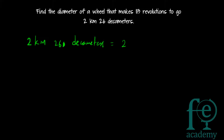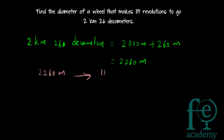So 2 kilometers 26 decameters equals 2000 meters plus 26 decameters, which is 260 meters. Therefore 2 km 26 decameters equals 2000 + 260 = 2260 meters. In order to go 2260 meters, 113 revolutions are required.